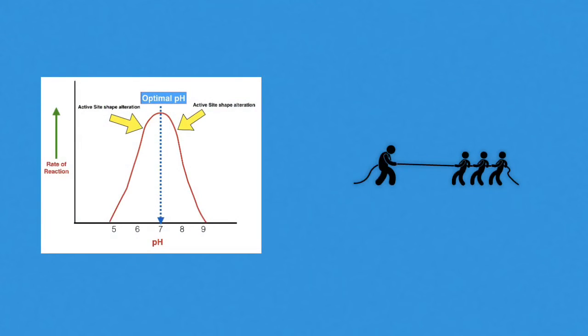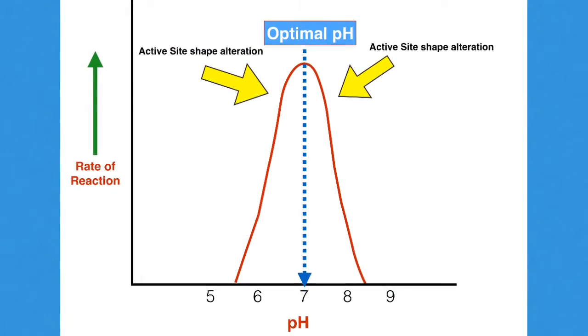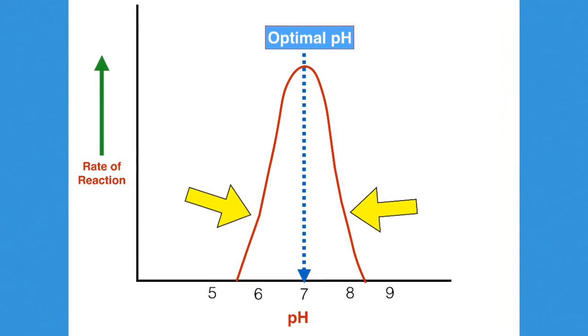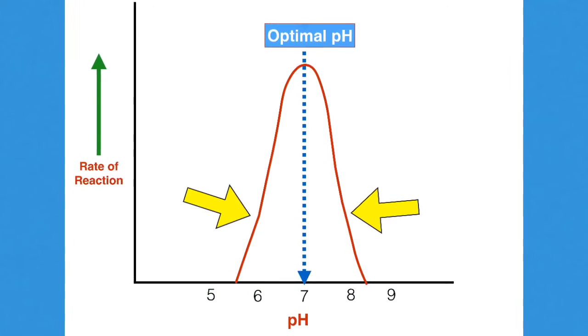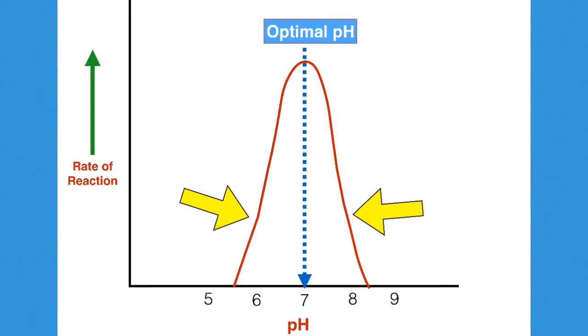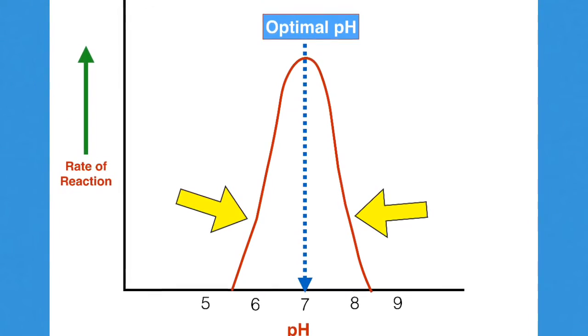Any deviation from the optimal pH results in a sort of chemical tug of war where the bonds holding the active site together get strained. Altering the pH interferes with the chemical bonds holding the active site in place, giving it its shape. As the pH deviates away from the optimal pH, you'll notice a drop in the rate of reaction or a drop in the rate of enzyme activity. It's because those active sites are being altered and can no longer catalyse the reaction.